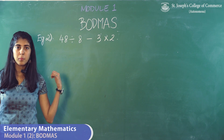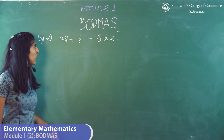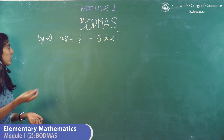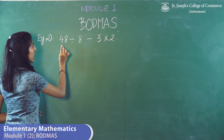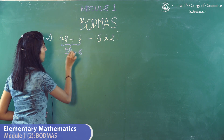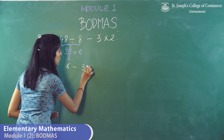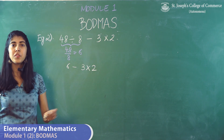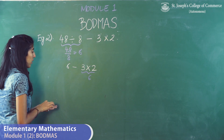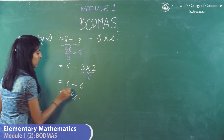Let's try a different example: 48 divided by 8 minus 3 into 2. There are no brackets and no orders, so we start directly with division. Only 48 and 8 are involved in division: 48 divided by 8 equals 6. We rewrite as 6 minus 3 into 2. Next, multiplication: 3 into 2 equals 6. So we have 6 minus 6, which equals 0.